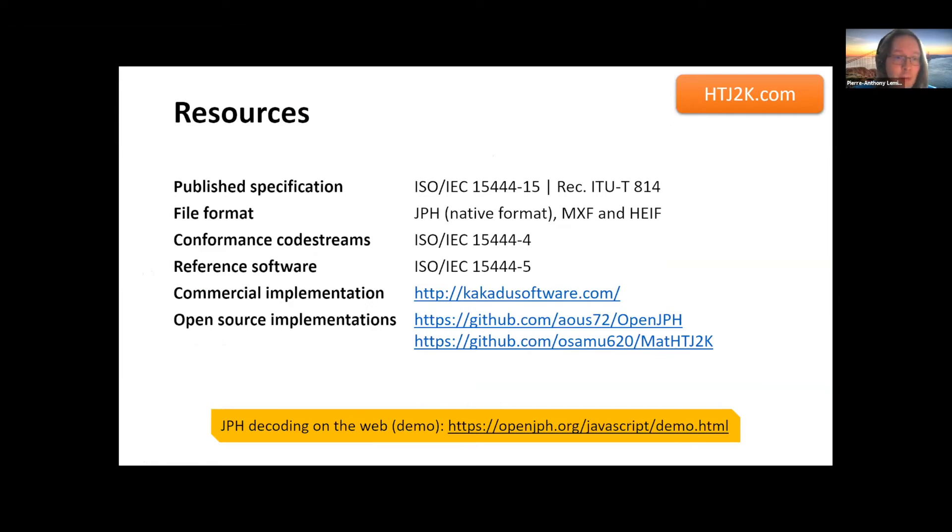Some resources. So it's a published specification, both by ISO and ITU. And we were discussing this over the break. We're working hard to make those specs available for free. It's really changing the minds of bureaucrats in Geneva. So if you're interested in helping, let me know. File formats, again, because it's essentially using the same structure as JPEG 2000. It's really a drop-in replacement for JPEG 2000 in professional file formats like MXF. There's also a mapping to HEIF. It has its own native file format, JPH. That's very similar to JP2. And there are some conformance code streams available. There's some reference software. There's a commercial implementation. There are multiple open source implementations. I want to talk about this for a few seconds next. So this one, OpenJPH is a C implementation that can be transpiled into JavaScript. And we'll see them in a few seconds. There's also a MATLAB implementation for folks that really want to go more into details and maybe want to do their own implementation.